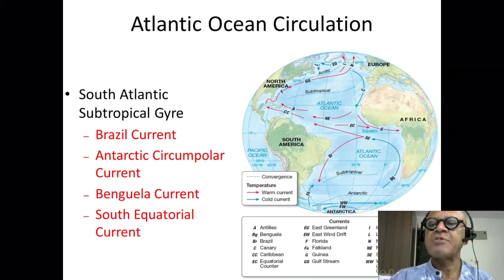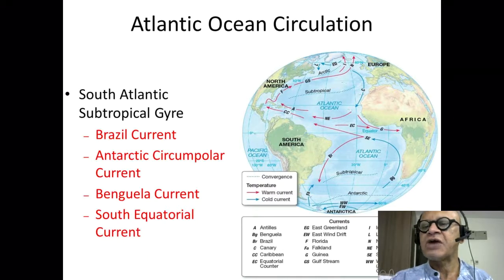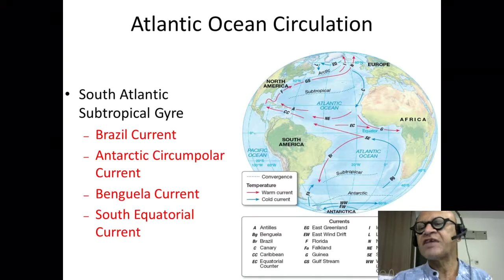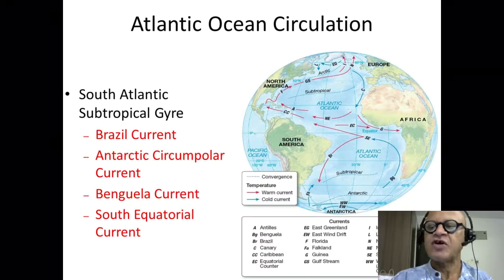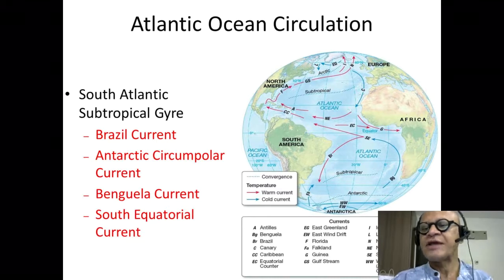the Labrador current there, the Equatorial counter current, this little current sneaking into the Gulf of Guinea is the Guinea current, and then you have the southern ends with the subtropical front, the Antarctic front, the Falklands current, the Brazil current, and so on.